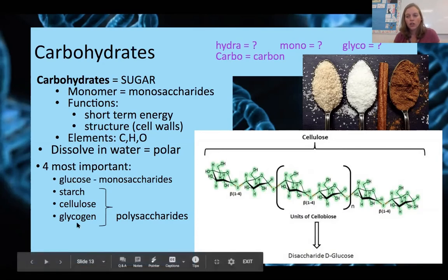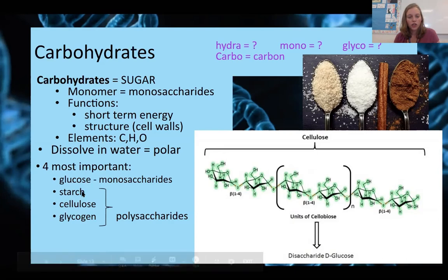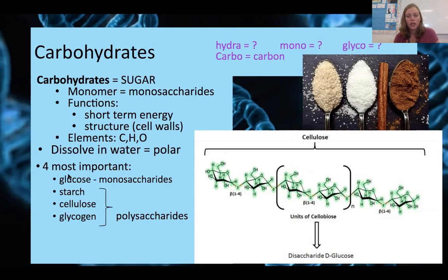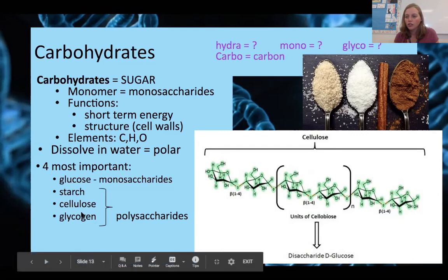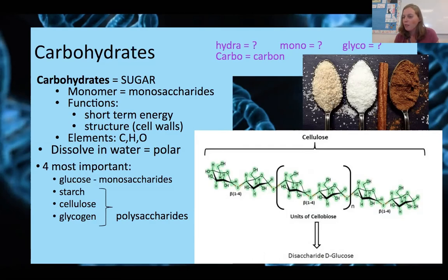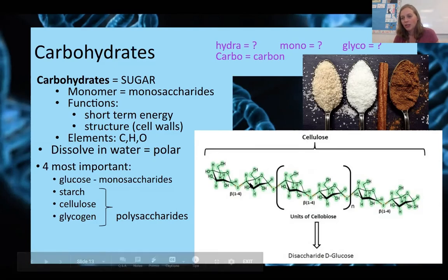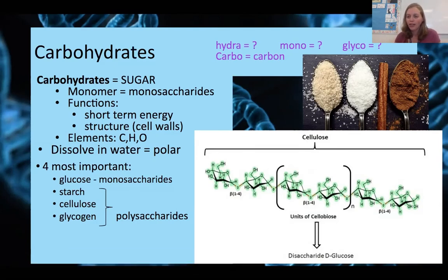The four most important carbohydrates are glucose, starch, cellulose, and glycogen. Glucose is the main monosaccharide, providing short-term energy from photosynthesis. Starch is a plant sugar storage molecule. Cellulose is fiber, making up plant cell walls. Glycogen is how animals store sugar. Pictures of raw sugar, white sugar, and cinnamon illustrate carbohydrates — cinnamon has lots of cellulose because it is bark from a tree.